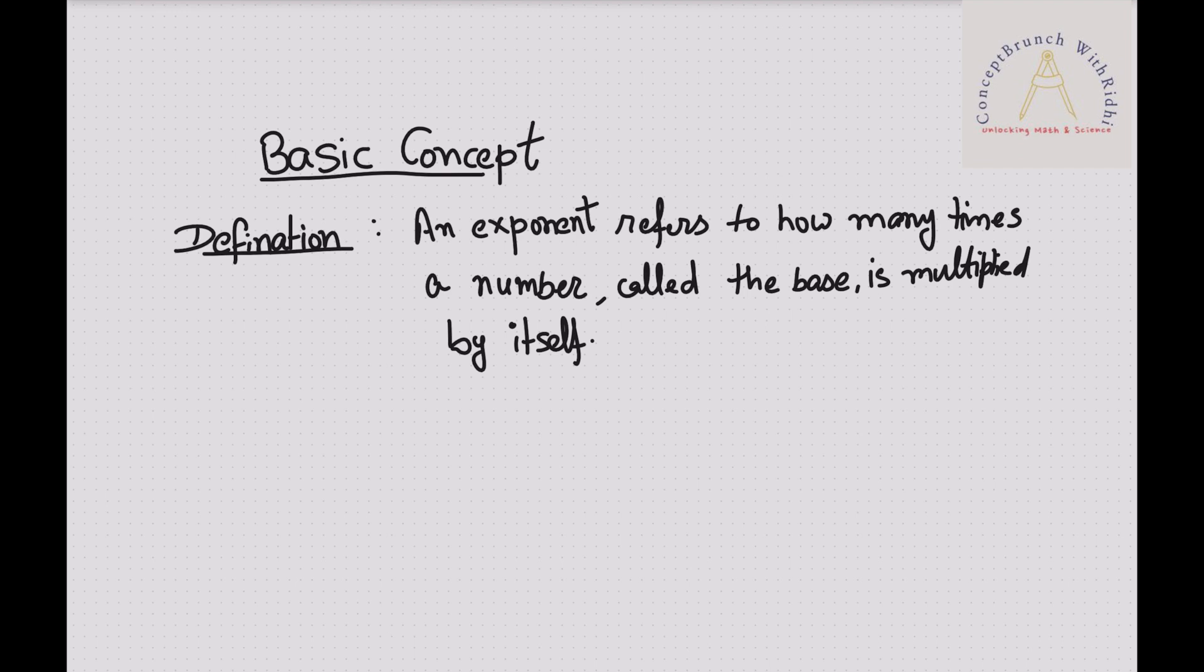An exponent refers to how many times a number, called the base, is multiplied by itself. For example, let's take the general thing, that is a to the power n. We can just write as a times a times a times a, and so on. We can write till n times, so this last a is till n times.